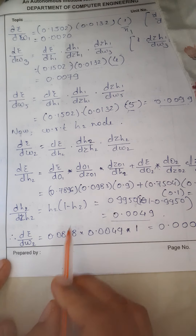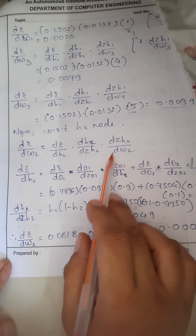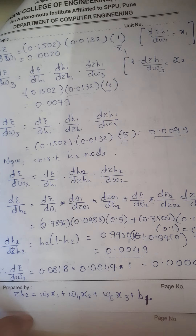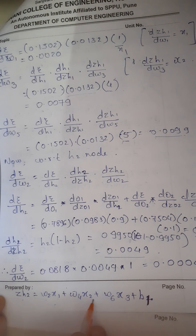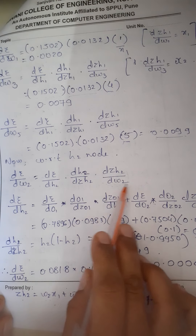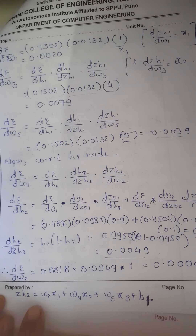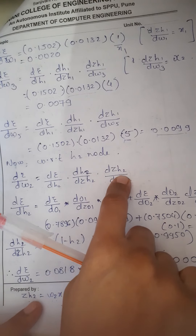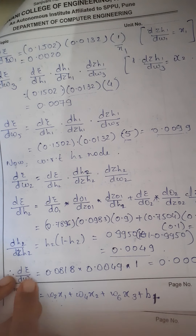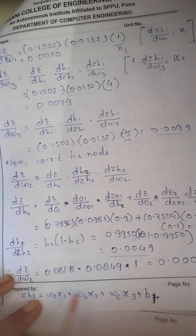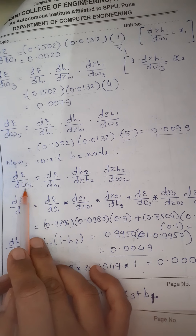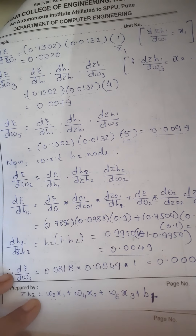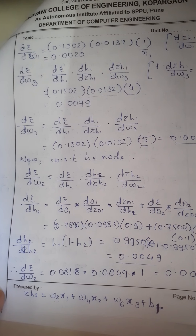Further, we have found DE with respect to DH2. Now we have to find the next term. For this term, we take the derivative for the sigmoid function — it is nothing but H2 into 1 minus H2. Putting those values gives us that answer. The third one is DZH2 with respect to DW2. You take the formula for DZH2: ZH2 equals W2X1 plus W... Taking derivative with respect to W2, all terms cancel — only W2X1 remains, W2 gets cancelled, answer is X1 which is 1. Substituting all three values and multiplying gives the final answer for DE with respect to W2. We have to do the same with respect to W4 and W6. We will continue in our next video. Thank you.